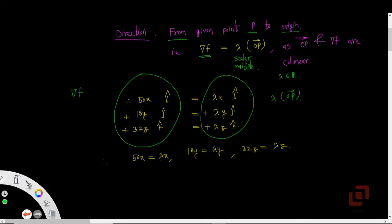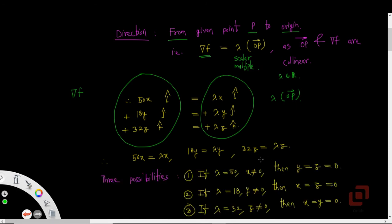Equating the components we get 50x = λx, 18y = λy, and 32z = λz, which gives us three different possibilities.